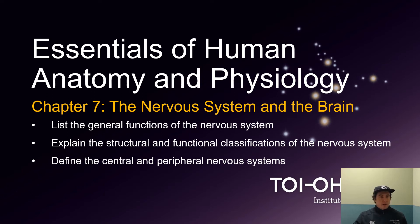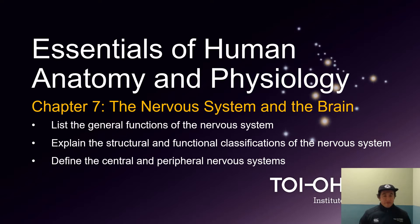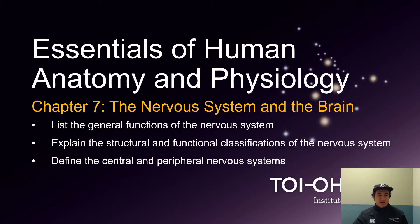Kia ora team, welcome to our last block of content for anatomy and physiology. For our first block of content we're going to look at the nervous system and a little bit on brain structure and function. To start with we're going to list general functions of the nervous system, explain structural and functional classifications, and then define the central and peripheral nervous system.